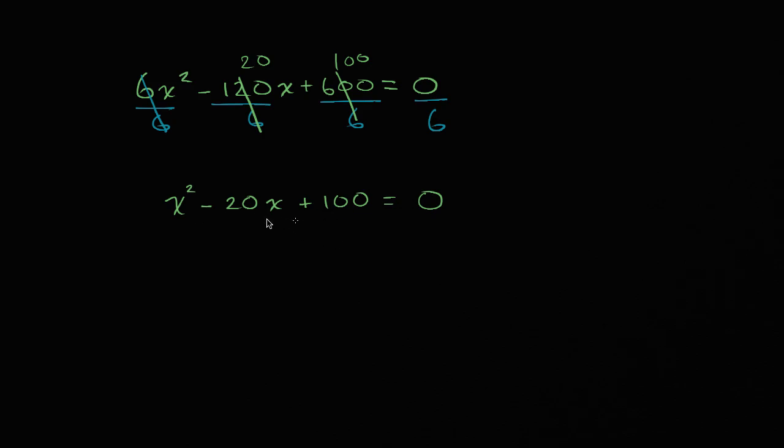So let's see if we can factor, if we can express this quadratic as a product of two expressions. And the way we think about this, and we've done it multiple times, if we have x + a times x + b, and this is hopefully a review for you, if you multiply that out, that is going to equal x² + (a + b)x + ab.